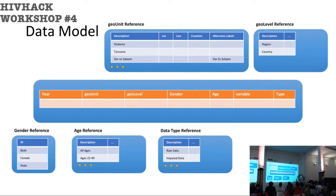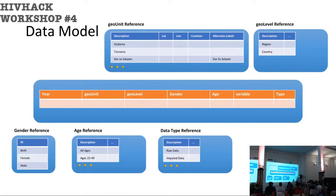The data model is centered around a time indication — the year — and the geographical unit, which can be the name of a region or a country. In Tanzania, for example, Arusha is a region; Tanzania is a country. The gender dimension captures whether data is for females, males, or both combined. You will find HIV and population data that specify female population, male population, or HIV prevalence in females, males, or both genders together.